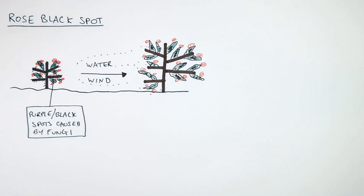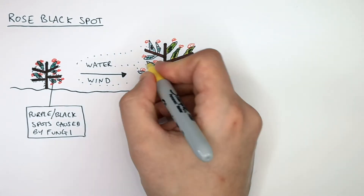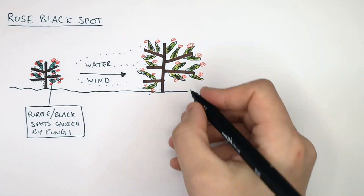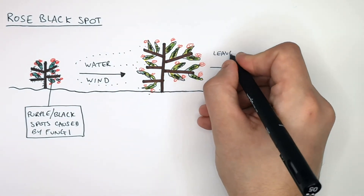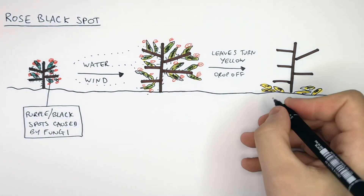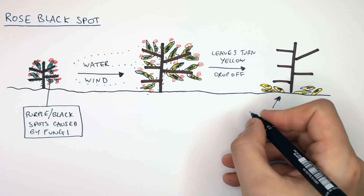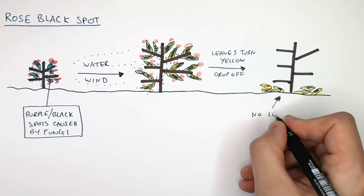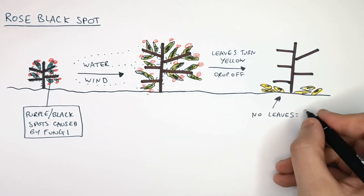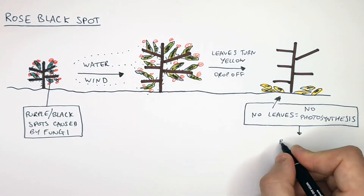The first identifiable symptom of rose black spot is black spots on the leaves. The leaves then turn a yellowy colour and drop off. As you can see here, the yellow leaves infected with rose black spot have dropped off. If there are no leaves on the plant, there will be no photosynthesis, which means the plant will die.